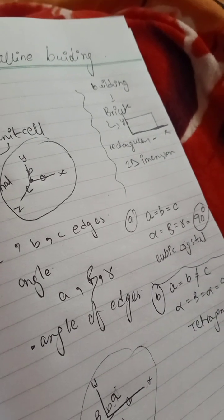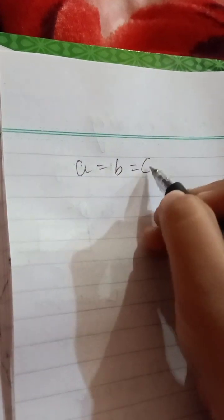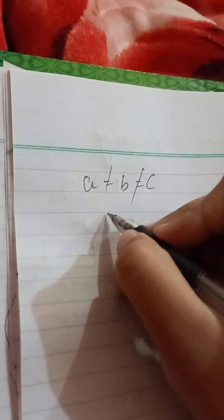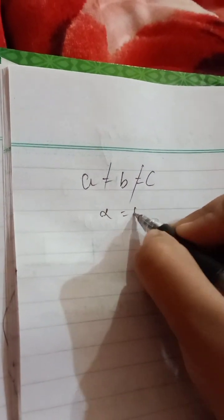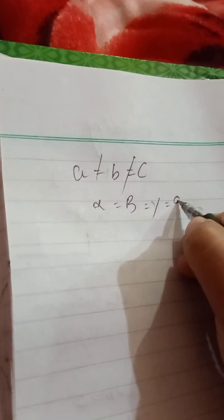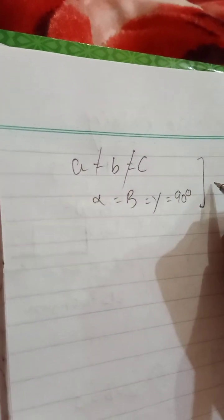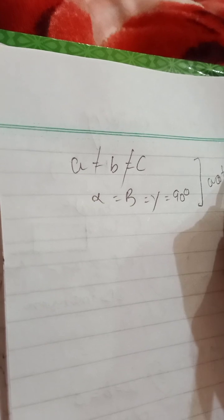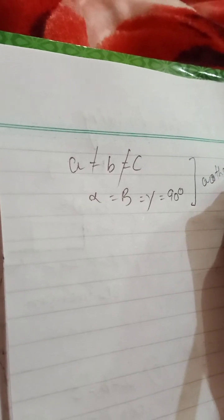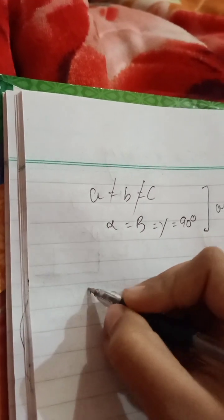We are having the third one: when a ≠ b ≠ c but alpha = beta = gamma = 90°, the structure formed will be orthorhombic.